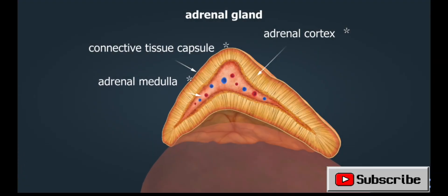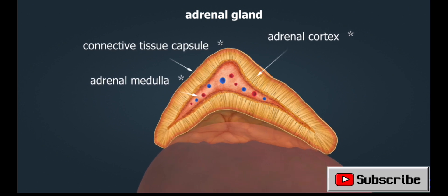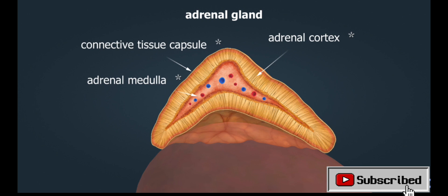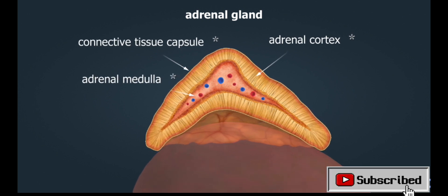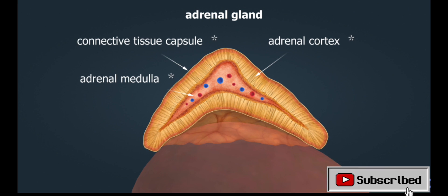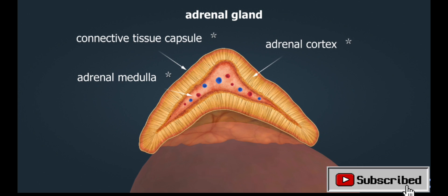The adrenal glands have a layered structure. They are covered with a connective tissue capsule. Below the capsule is the adrenal cortex, and in the center, the adrenal medulla. The adrenal cortex constitutes the bulk of the adrenal gland, accounting for about 90% of its volume.